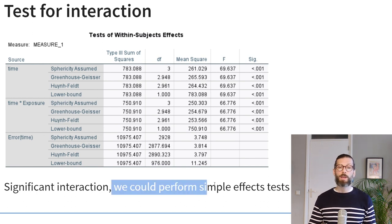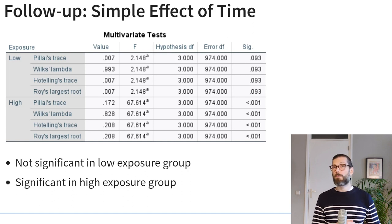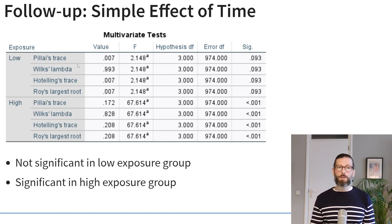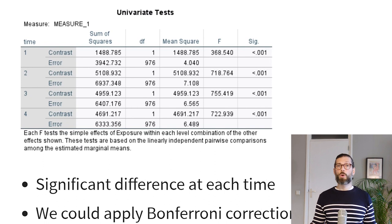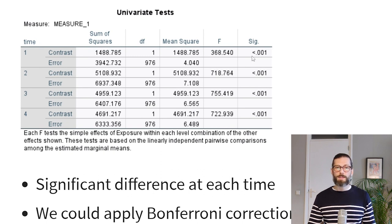Because there is a significant interaction, we can perform simple effects tests. Using the multivariate approach, we get multivariate effects for the effect of time in the low and high groups separately. Pillai's trace shows there is no significant effect of time in the low combat exposure group, whereas there is a significant effect of time in the high combat exposure group. We can also look at the simple effect of exposure at each time point separately, finding a significant difference between the two exposure groups at each of the four time points.